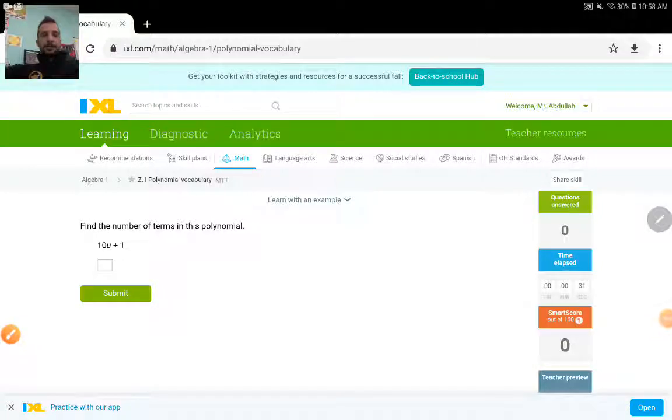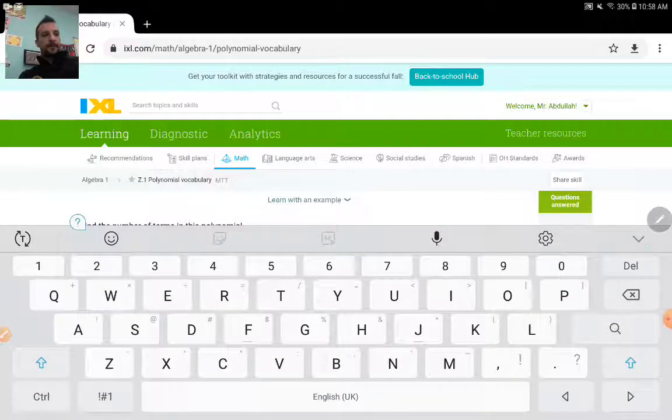Hello everyone, Mr. Abdullah here. In this video, we are going to talk about polynomial vocabulary. It is on IXL Z1. The unique code of the assignment is MTT. If you search for MTT at the top in that search bar over here, you will be able to locate this assignment.